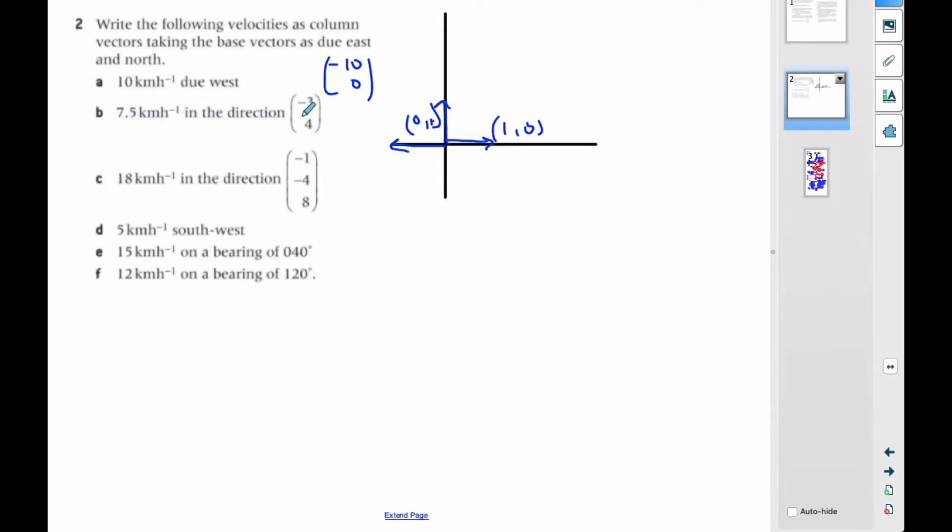When I'm going to do 7.5 in this direction, I need to find, so (-3, 4) is here. I need this length to be 1. So what I do, I find the magnitude of (3, 4), which I've done a million times is 5, 3 squared plus 4 squared square root.